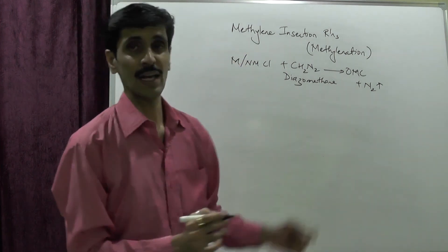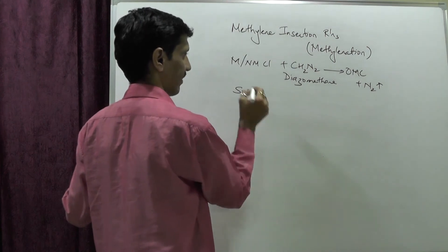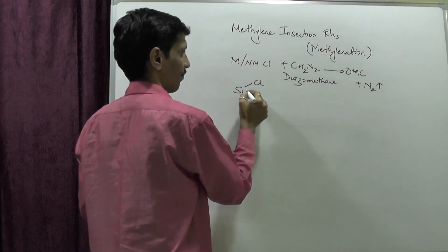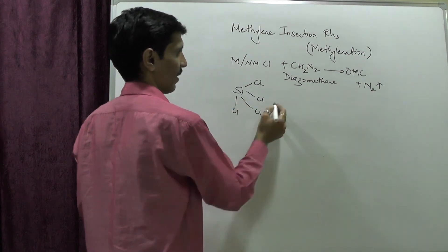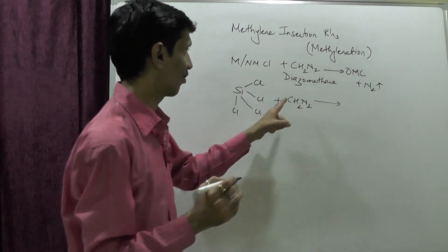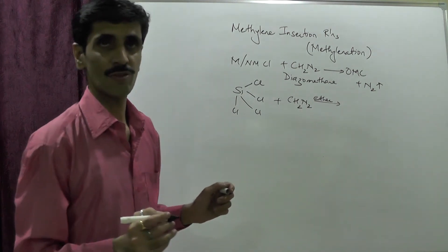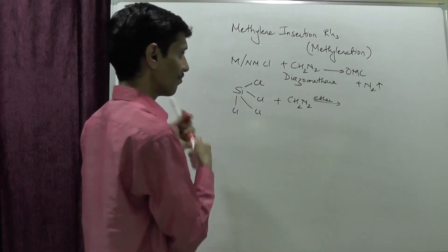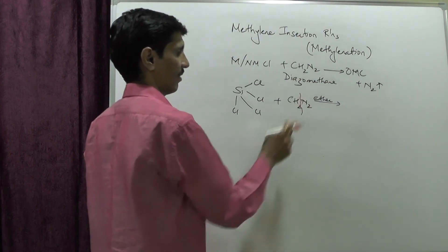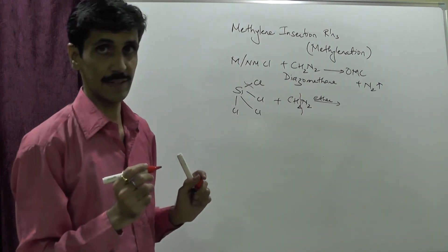For a specific example, take silicon tetrachloride, SiCl4, treated with CH2N2 (diazomethane), in the presence of ether as a solvent. The carbon-nitrogen bonds in CH2N2 break, releasing free nitrogen gas. One of the bonds between Si and Cl breaks. Two bonds are broken in total — the two C-N bonds — and carbon now has to form two new bonds.